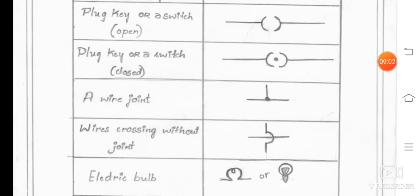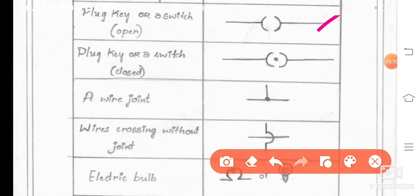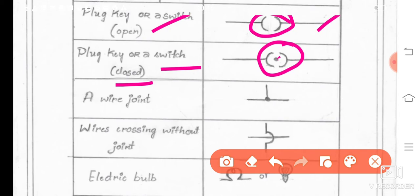Next one is plug key or a switch. It is going to be represent like this. Next one, plug key or switch. Here this one is closed. Closed means, here you can observe the difference between these two. Here there is a dot. Here there is a dot. Here there is no dot. When there is no dot, then the plug key is open. When there is a dot over here, then that is closed.